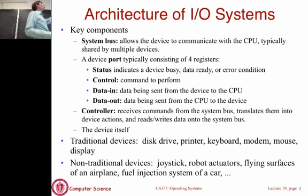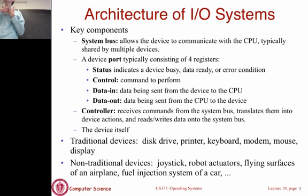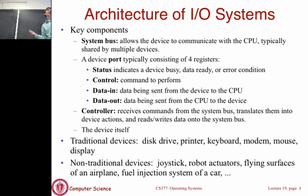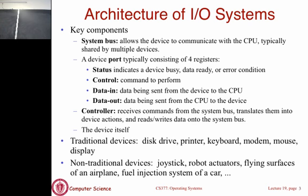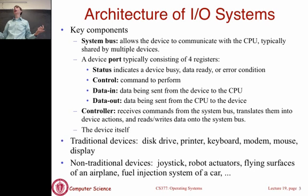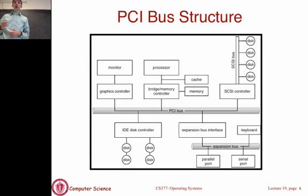Assuming a simple device that only gives or receives one small piece of data at a time, reading or writing a lot of data requires repeatedly updating these register values. If I want to read a gigabyte of data from a disk using this basic approach, I'd have to continually issue read requests and keep reading small pieces from the data-in register, one small block at a time. Obviously that's going to be pretty slow, so we'll talk later about how to do that more efficiently.